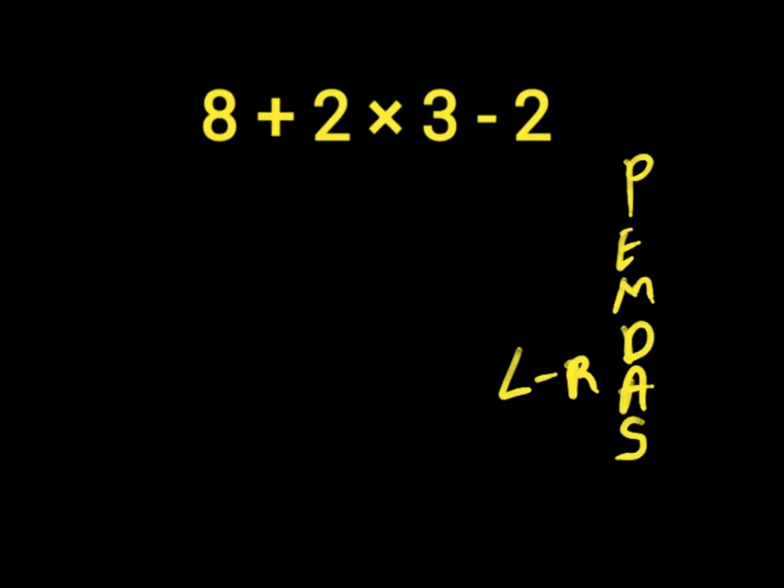First of all, we solve our multiplication because it comes first before addition and subtraction. So 2 times 3 will give us 6. Then we have 8 plus 6 minus 2.